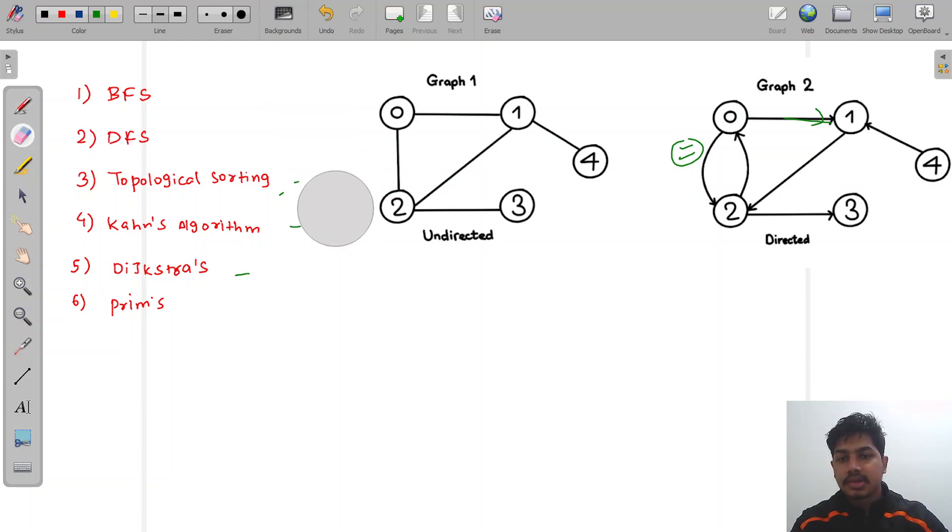Dijkstra's algorithm: let's suppose that if we want to go from node zero to any other node, and these edges represent some weight—let's suppose it represents 10, 20, 30, and 40—and we want to go from node zero to all other nodes and we want the shortest path or the minimum cost in which we can reach all other nodes, then Dijkstra's algorithm is used.